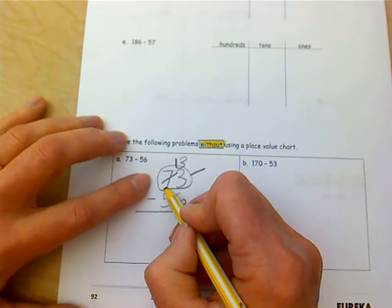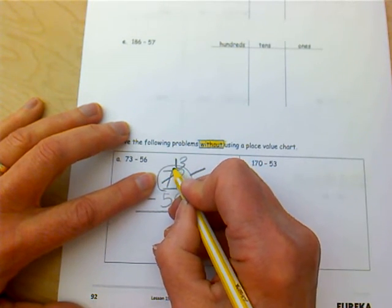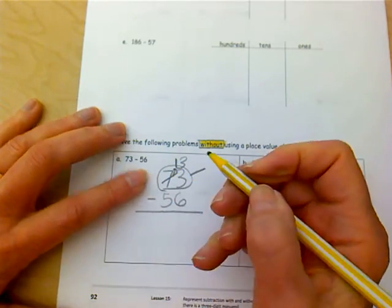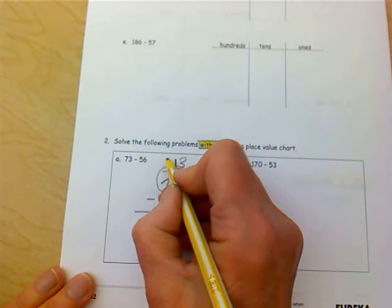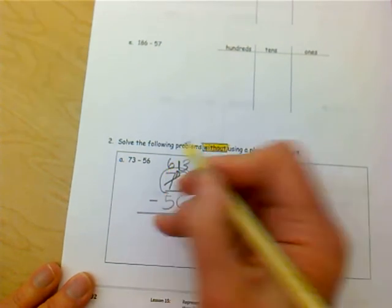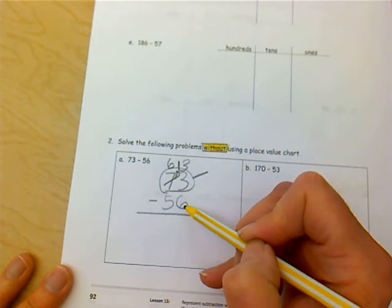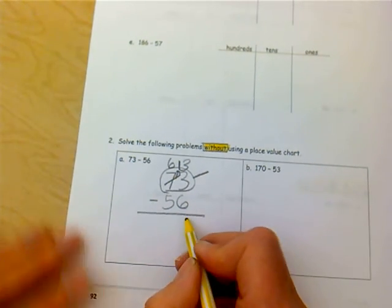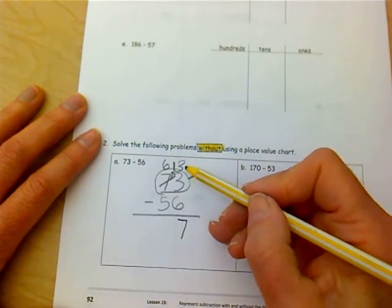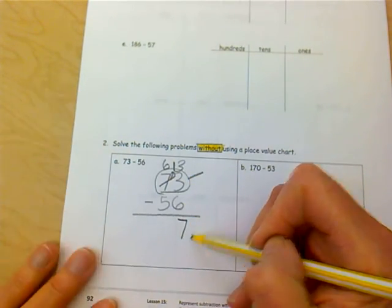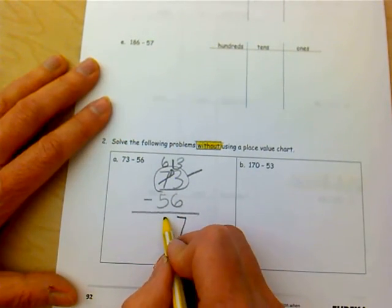10 ones plus three ones gives us 13 ones. And that left me now that I've decomposed and moved that right there. I'm going to draw that little arrow to show that I've decomposed and moved that 10 up into the ones. That leaves me now with six tens. So 13 ones take away six ones leaves me seven ones. This is where you have to know your subtraction facts. 13 take away six is seven.